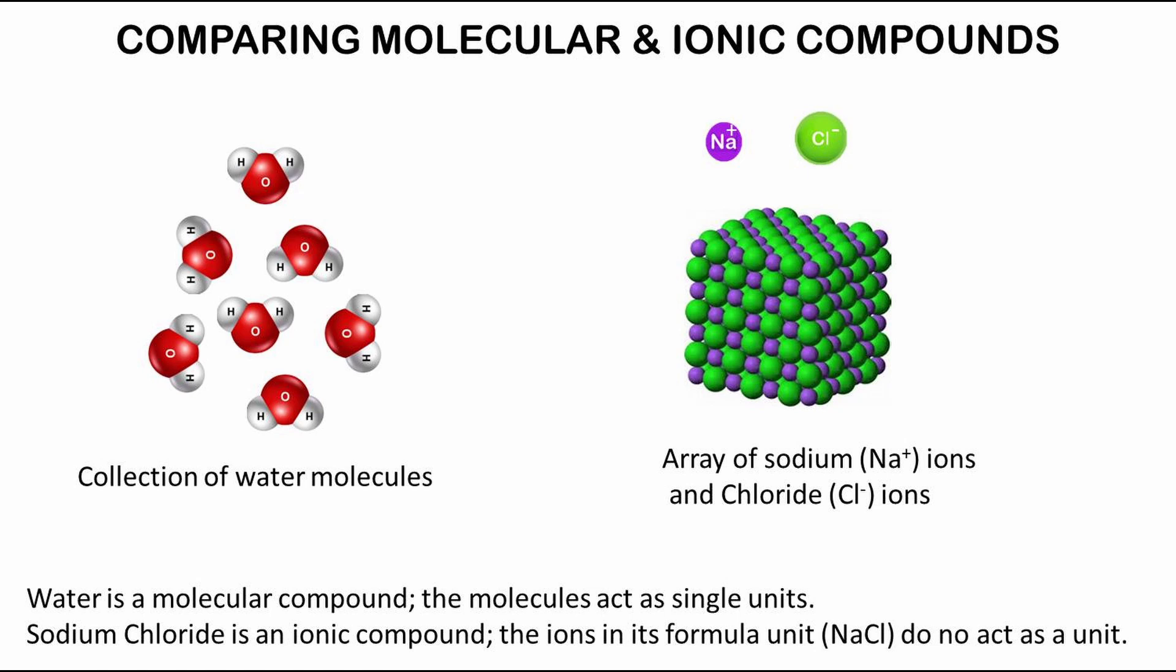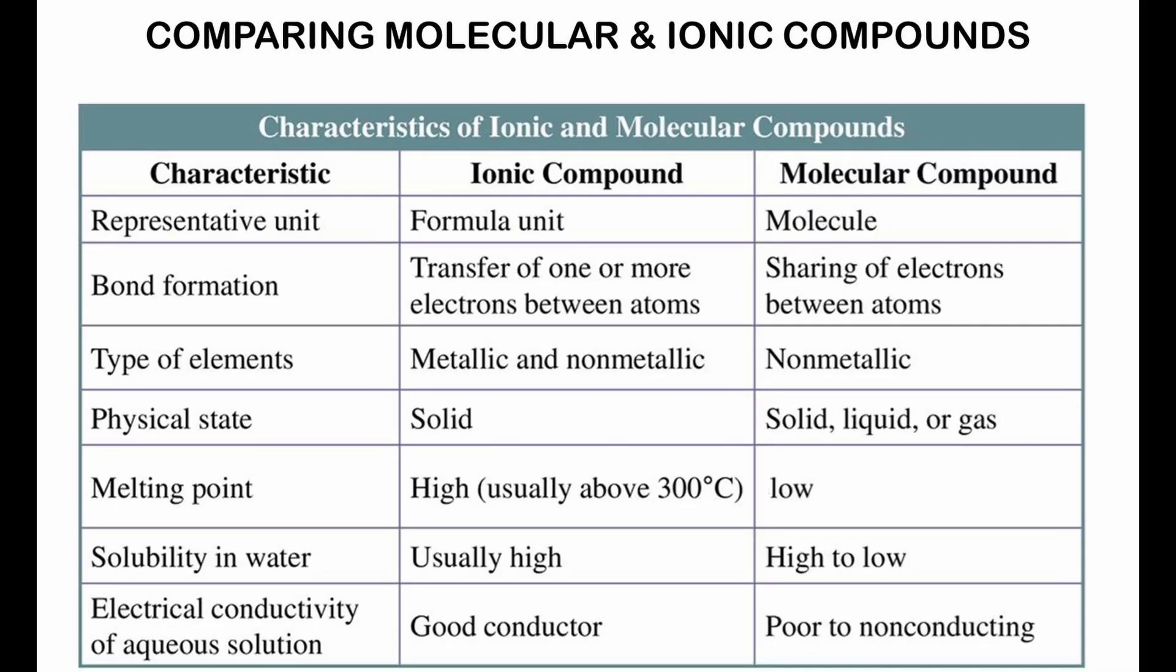When comparing the characteristics of molecular and ionic compounds we notice several important differences. If you look at a collection of water molecules, the molecules act as single units. Sodium chloride is an ionic compound; the ions in its formula unit do not act as a unit. An ionic bond involves the transfer of electrons between atoms, while a covalent bond involves sharing of electrons between atoms. Molecular compounds usually have lower melting and boiling points than ionic compounds. Many molecular compounds are gases or liquids at room temperature, while ionic compounds are mostly solids.